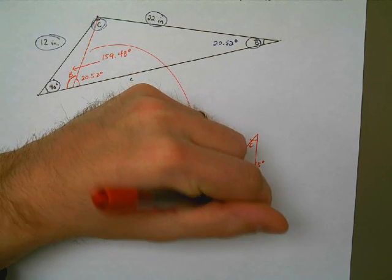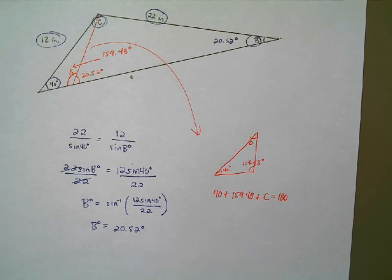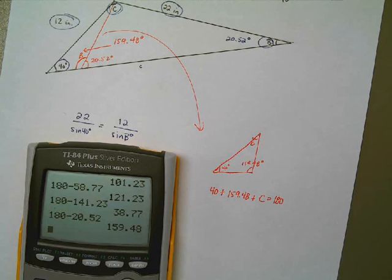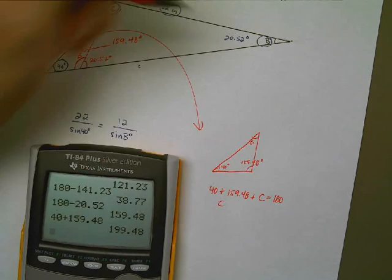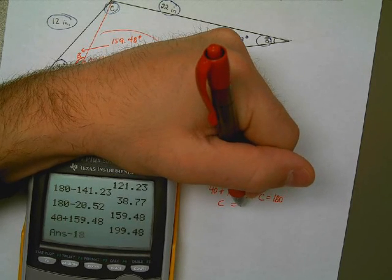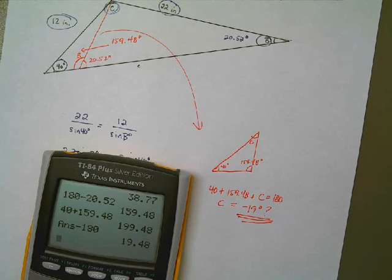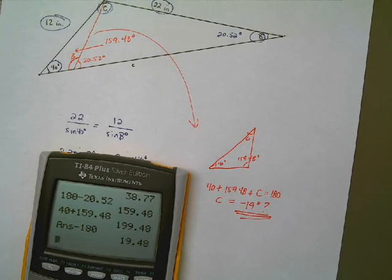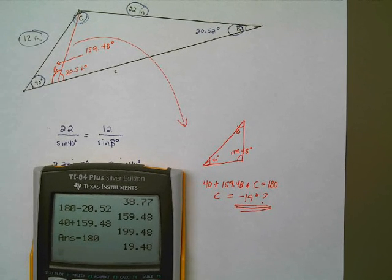So I'm saying that 40 plus 159.48 plus whatever angle C here is would have to add up to 180. And if you notice, if I add 40 and 159.48, I'm already well over the 180 mark, which means that C would have to be a negative angle, which is not possible. It would have to be negative 19 degrees. And what that means is the second triangle does not exist. The second triangle does not exist.